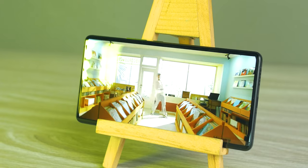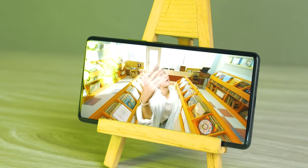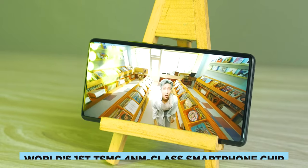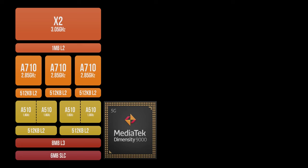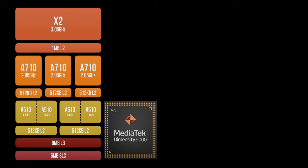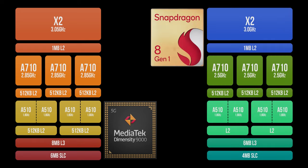The Dimensity 9000 is MediaTek's flagship chipset SoC, and the world's first TSMC 4nm-class smartphone chip. Their core architecture consists of a Cortex-X2, A710, and A510, using 8MB of L3 cache, while the system-level cache is 6MB. If we compare it to the Snapdragon 8 Gen 1, on paper, it has higher clock speed and both L3 and system-level cache.